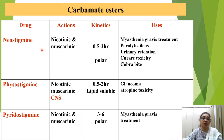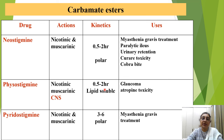Neostigmine acts on both nicotinic and muscarinic receptors, has a half-life of about 0.5 to 2 hours, is polar, and is used for myasthenia gravis, paralytic ileus, urinary retention, curare poisoning, and cobra bite. Physostigmine is lipid-soluble, penetrates the CNS, has both nicotinic and muscarinic action with CNS effects, and is used for glaucoma and atropine toxicity. Pyridostigmine acts on nicotinic and muscarinic receptors, has a half-life of 3 to 6 hours, is polar, and is used for myasthenia gravis.